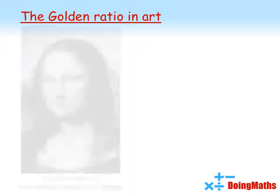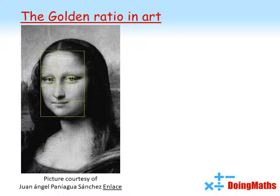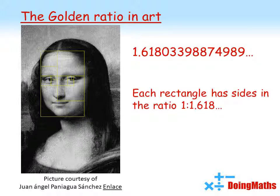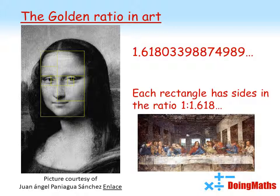One use for the golden ratio is in art. Here's the Mona Lisa, the famous picture by Leonardo da Vinci. On the picture you can see there are a load of rectangles drawn, and if we look at those rectangles spaced in particular places on the face, each of those rectangles has sides in the ratio one to 1.618 — the golden ratio. Leonardo da Vinci loved the golden ratio, and in his other pictures such as The Last Supper, you will find rectangles with sides in the ratio one to the golden ratio all through his work. He believed that this golden ratio created a fantastic form to look at in art.